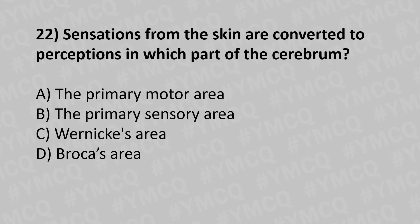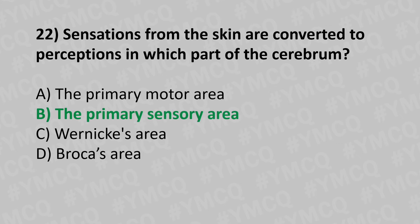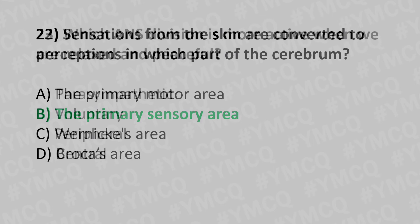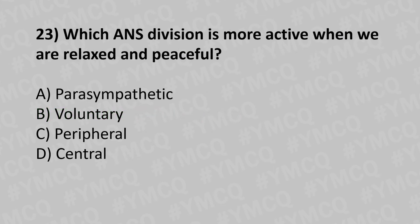Moving to our twenty-second question. Sensations from the skin are converted to perceptions in which part of the cerebrum? Option A: primary motor area. Option B: primary sensory area. Option C: Wernicke's area. Option D: Broca's area. And the answer is option B: primary sensory area.